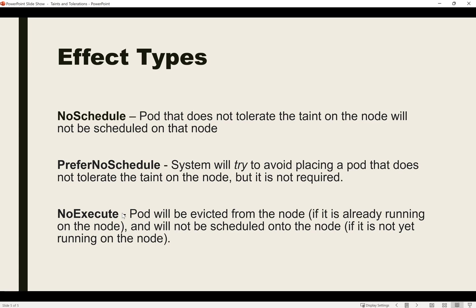The second effect is PreferNoSchedule. In this case, the scheduler will try to schedule the pod on the correct node, but if there is no matching toleration, it can still schedule the pod without the matching toleration. This means the taint here is preferred but not enforced.